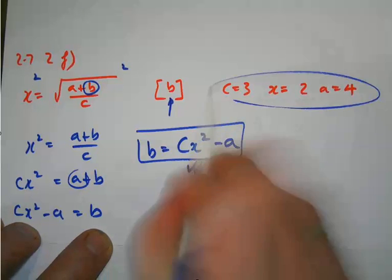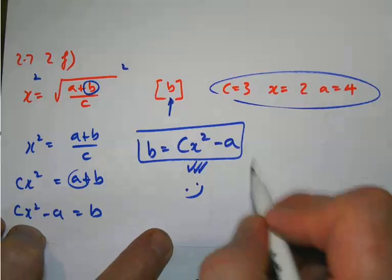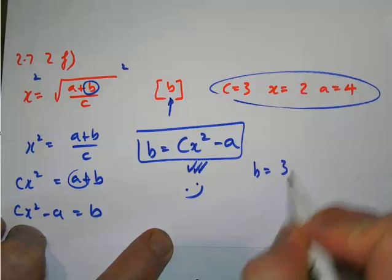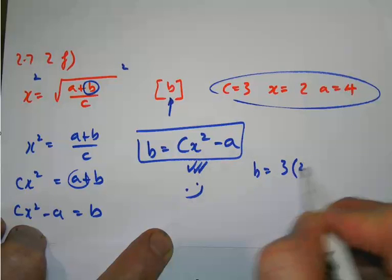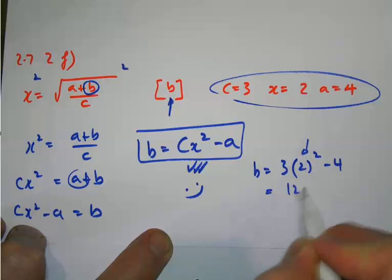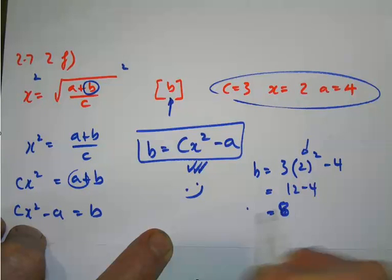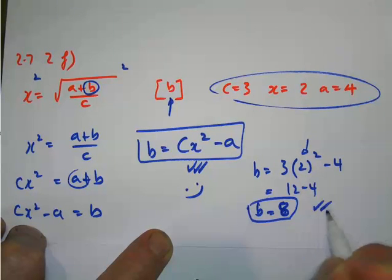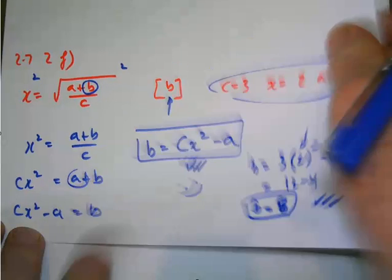Now I've got to sub in those values to find out what b equals. b will equal c, which is 3, times x, which is 2 squared minus 4. 4, 3 fours of 12, minus 4, b equals 8 is my answer. That's 2f.